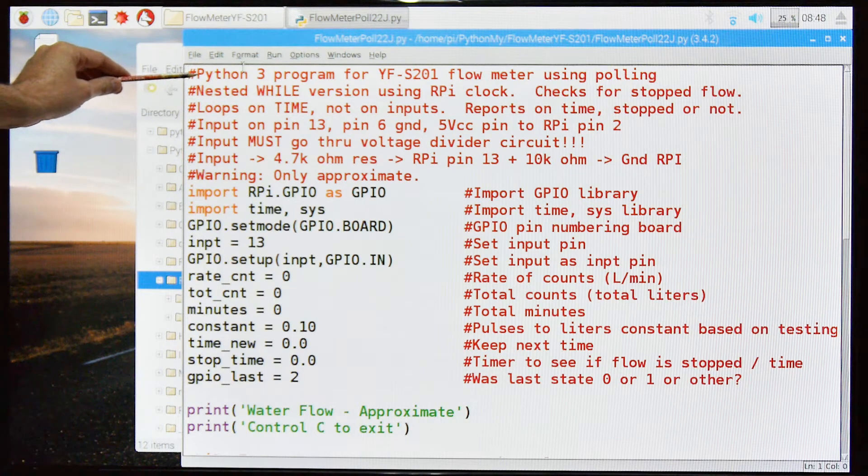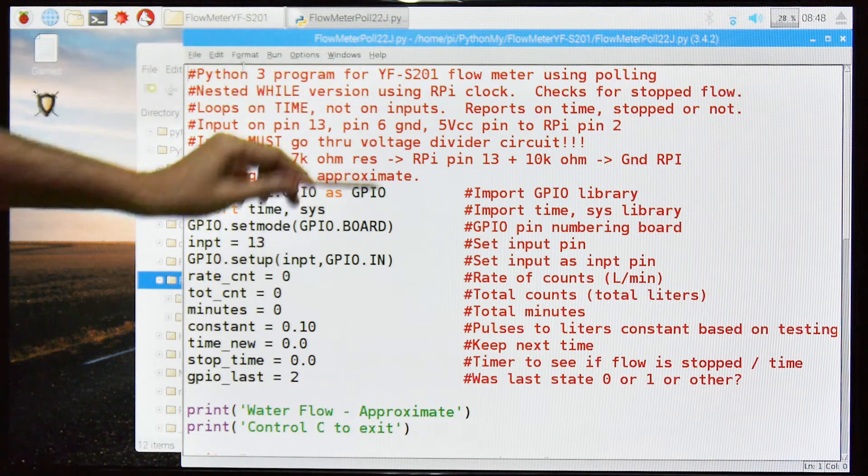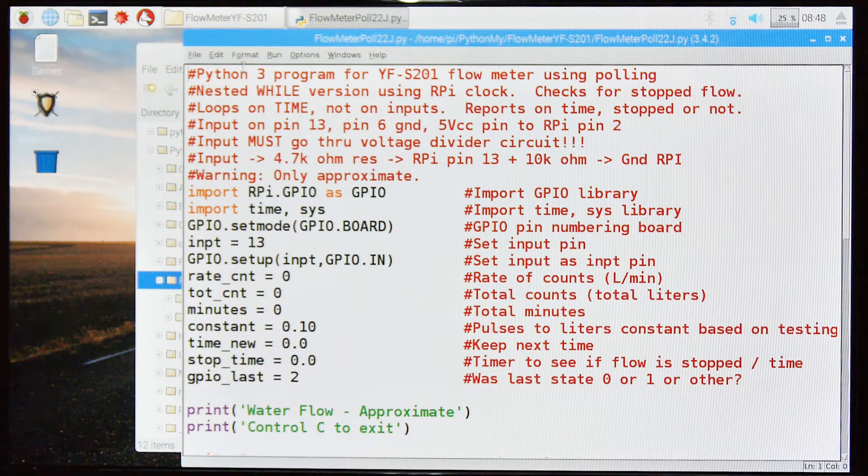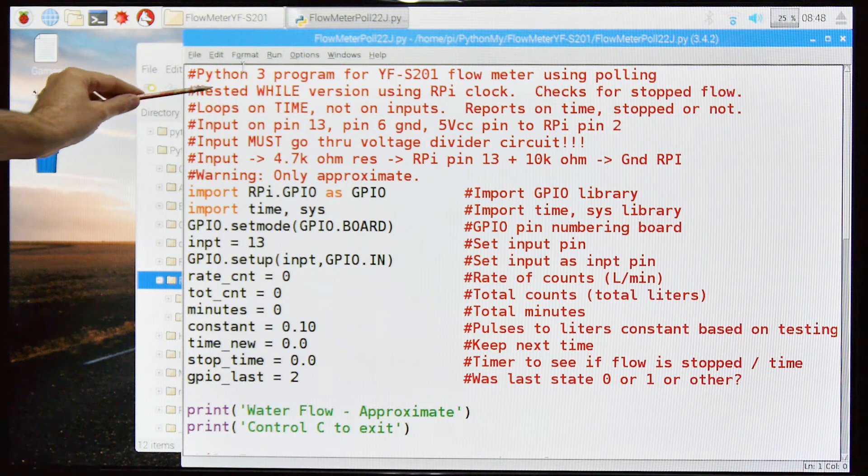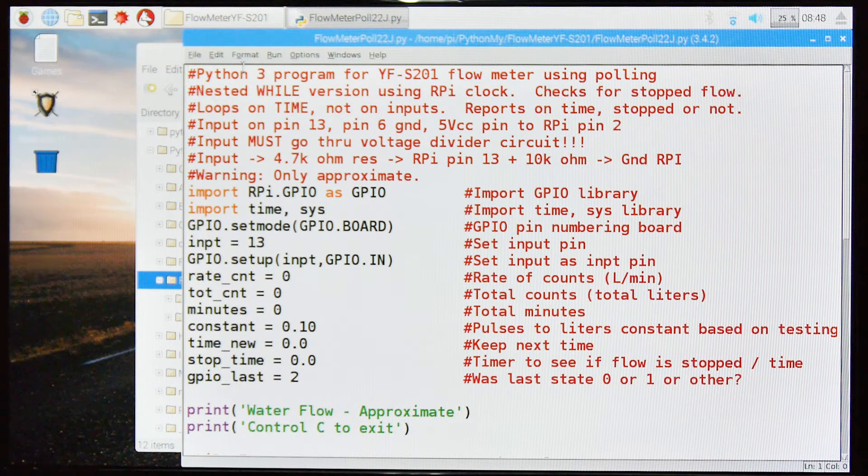This is another version of the software for the YFS201 flow meter. And again, this one uses polling. This one also checks for stopped flow. There's just a few subtle differences.